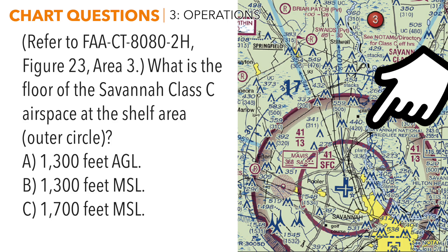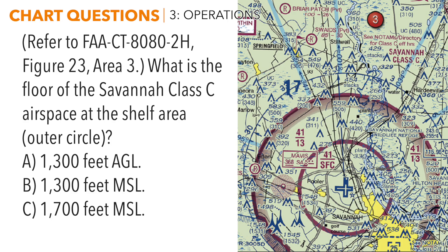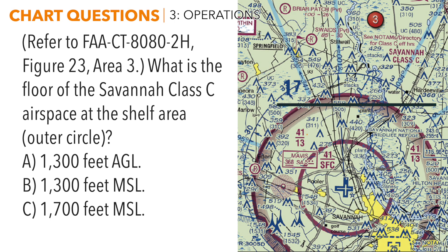Class C also has an outer shelf area that starts above the ground and goes up to the same altitude. This question is asking about that outer ring — the outer shelf area — and specifically asking what is the floor, the bottom of the airspace. The numbers in that ring follow the format ceiling over floor. We have 13 on the bottom; we always add two zeros, giving us 1,300 feet. But in the answers there are two options with 1,300.